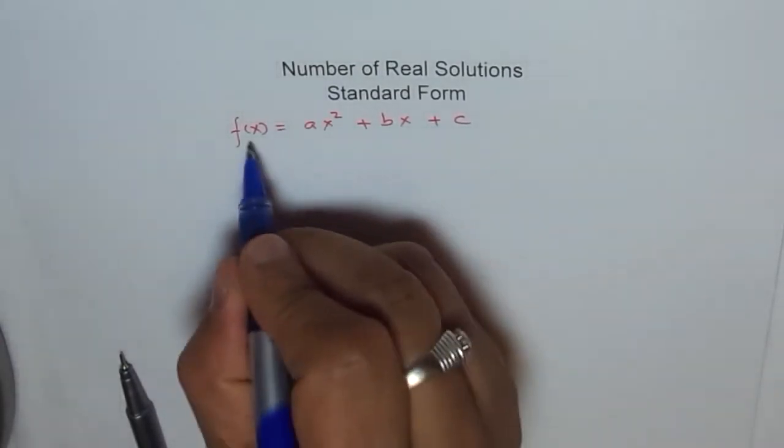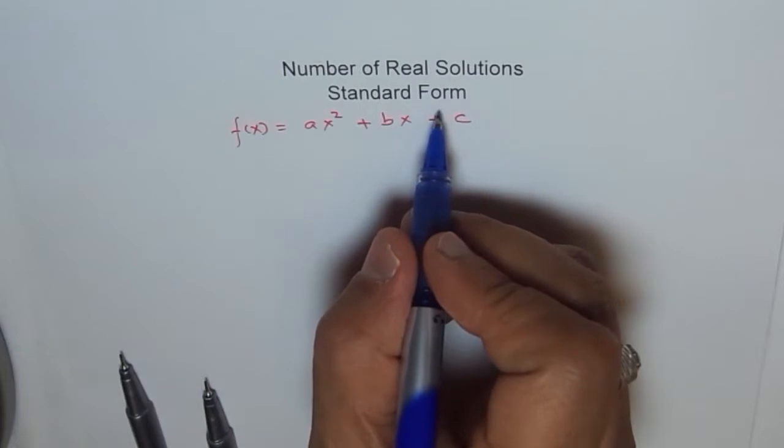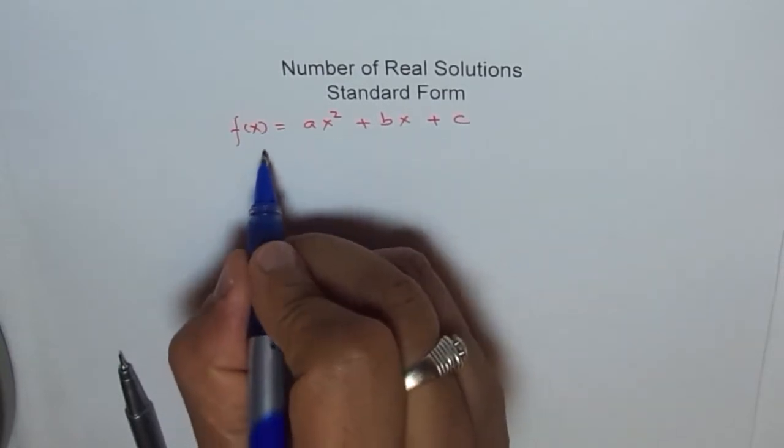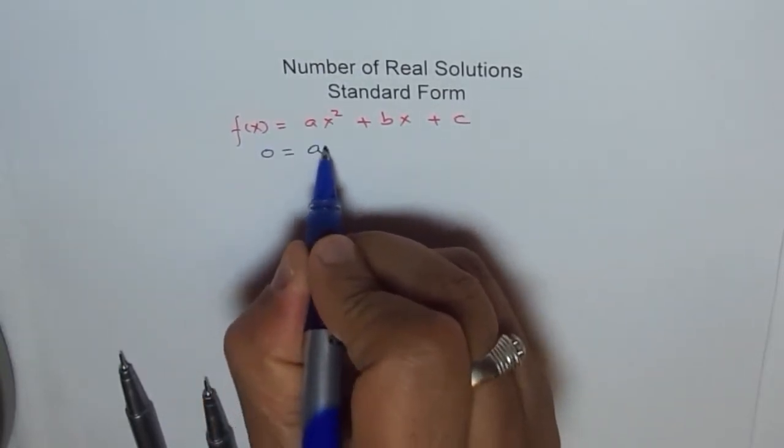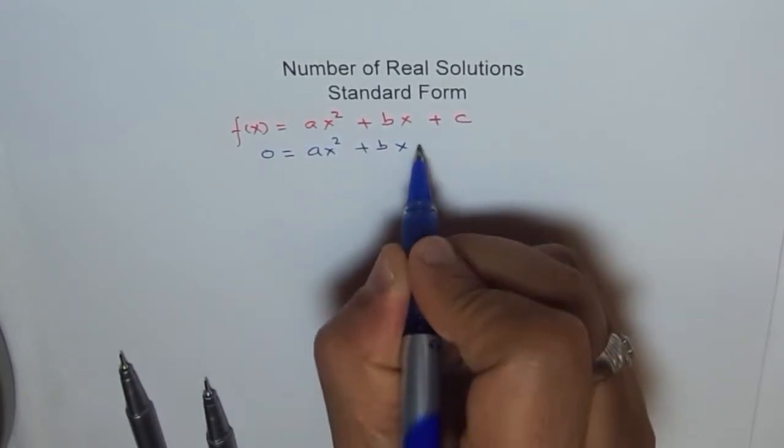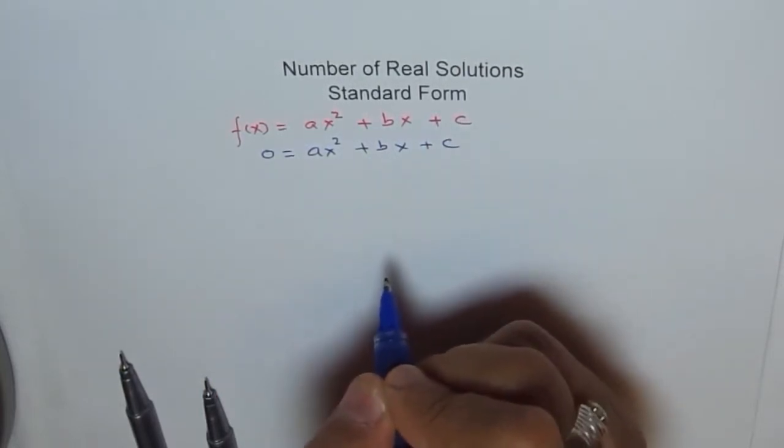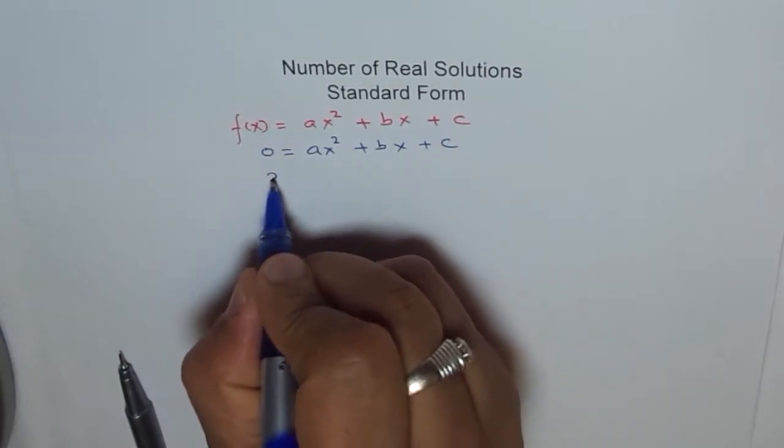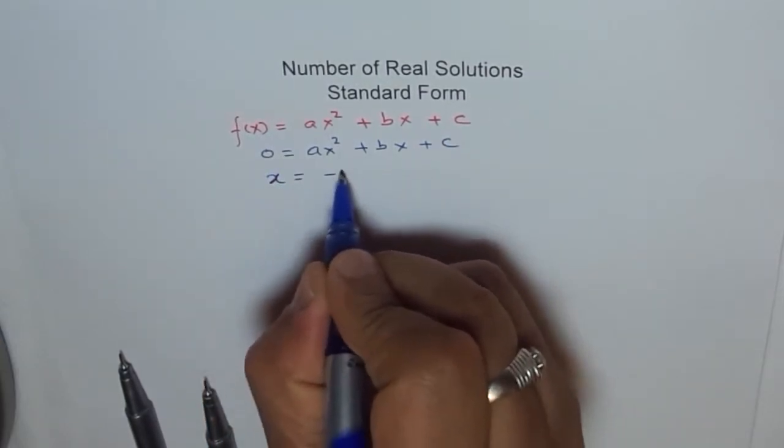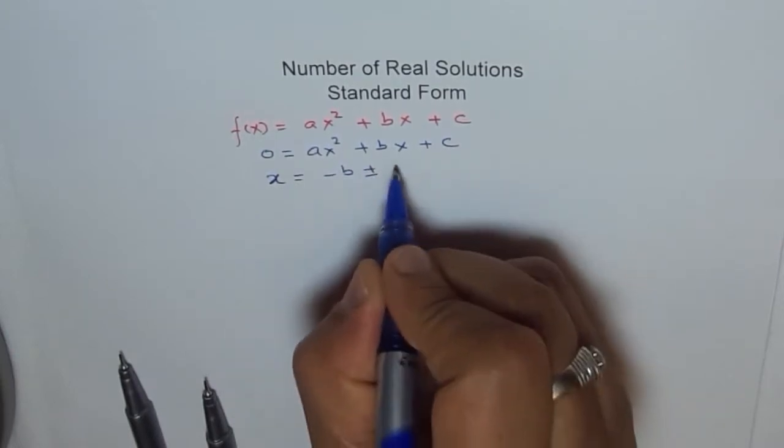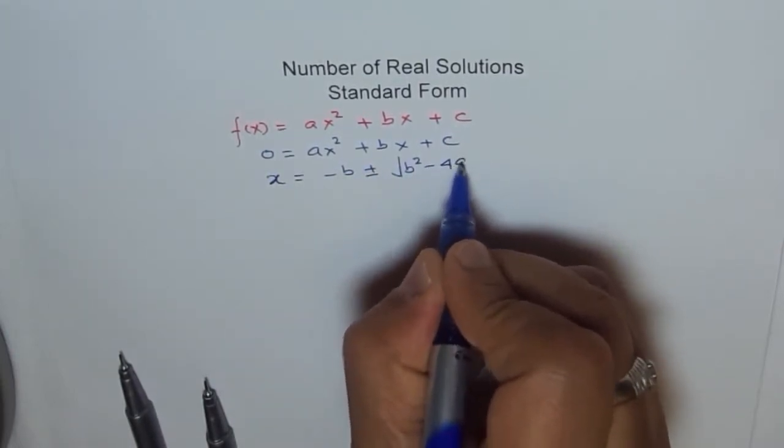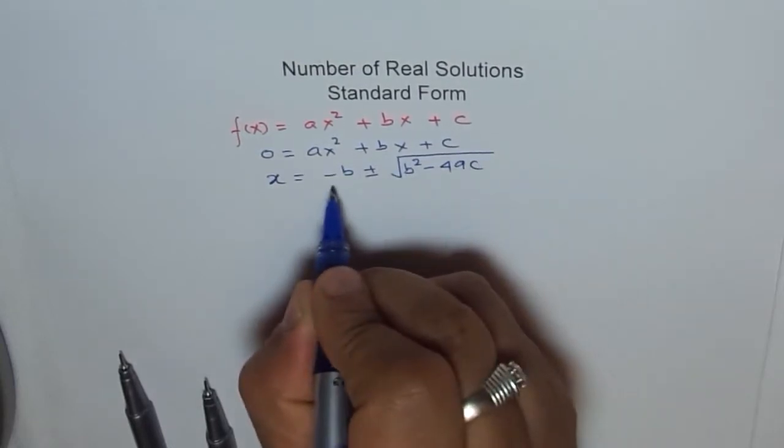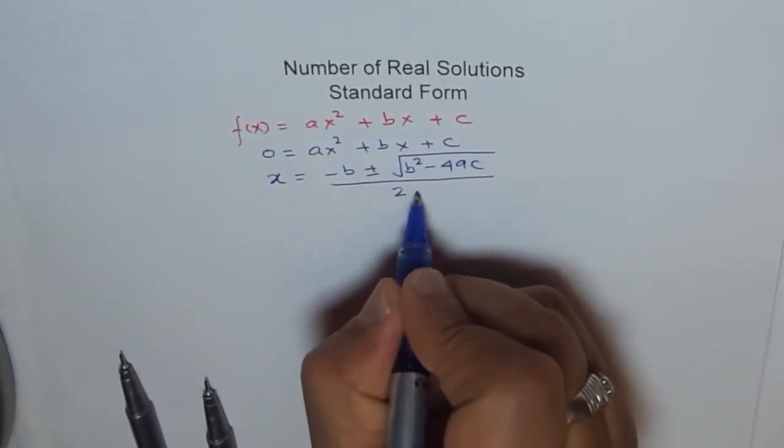So this could be solved for zero. When we say number of solutions, then we are looking for x intercepts or the value of the function is zero. That means zero equals to this. If I write zero equals to ax square plus bx plus c, then I can find solutions of this quadratic equation by the formula x equals to minus b plus or minus square root of b square minus 4ac divided by 2 times a.